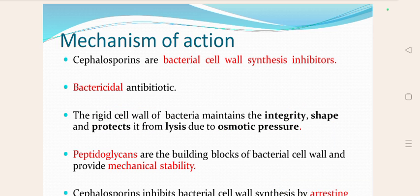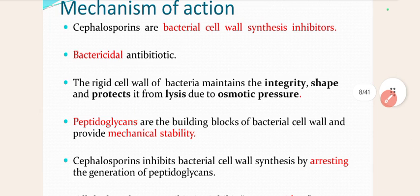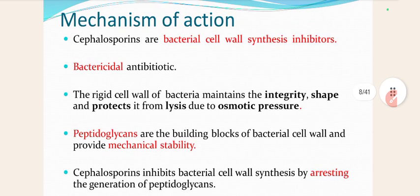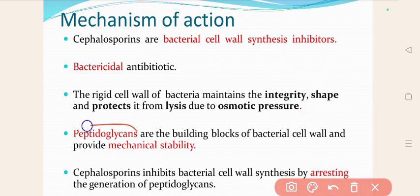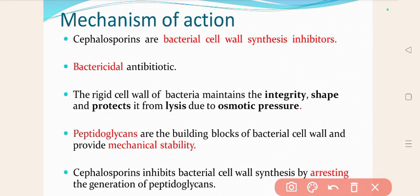Peptidoglycans are the building blocks of the bacterial cell wall and provide mechanical stability. They act like building blocks of the bacterial cell wall, and this peptidoglycan provides mechanical stability.